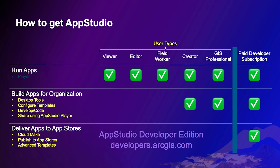If you want to deliver apps to the app stores, or maybe as a separate binary to your organization, and get access to the CloudMake service, that's going to require an AppStudio Developer Edition license. You can get that by subscribing to our developer subscription. To learn more about developer subscriptions, go to developers.arcgis.com.